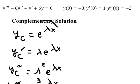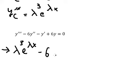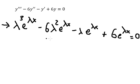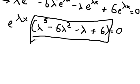We substitute all the derivatives into the equation. We factor out e to the power of lambda x, and now we need to find the solutions of the resulting characteristic equation.